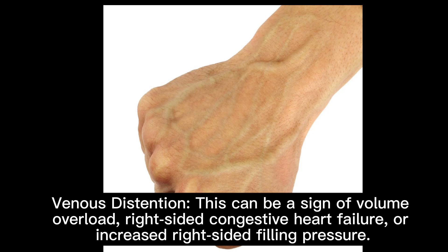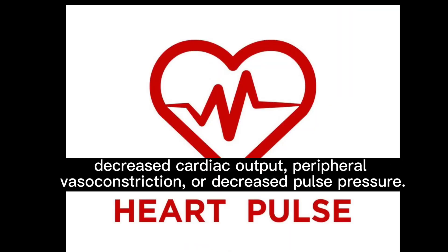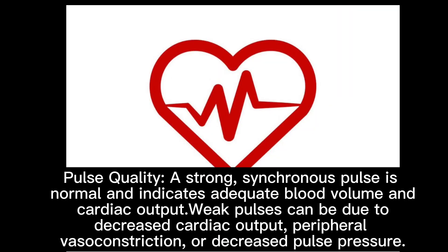Venous distension can be a sign of volume overload, right-sided congestive heart failure, or increased right-sided filling pressure. Pulse quality: a strong, synchronous pulse is normal and indicates adequate blood volume and cardiac output. Weak pulses can be due to decreased cardiac output, peripheral vasoconstriction, or decreased pulse pressure.